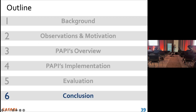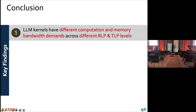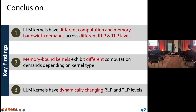To conclude our work, we have three key findings. First, LLM kernels have different computation and memory bandwidth demands across different RLP and TLP levels. Next, memory-bound kernels exhibit different computation demands depending on the kernel type. Third, LLM kernels have dynamically changing RLP and TLP levels.